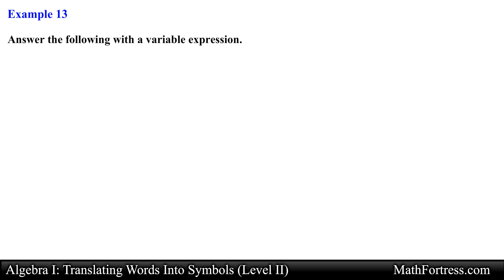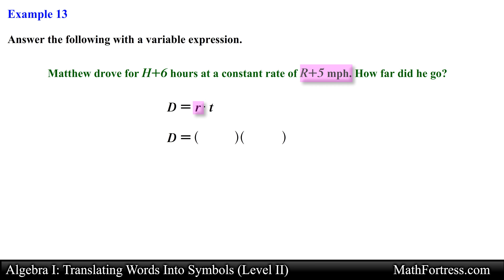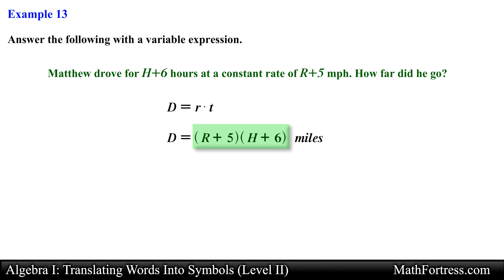Let's work on questions that require the use of formulas. 'Matthew drove for (h + 6) hours at a constant rate of (r + 5) miles per hour. How far did he go?' This is a distance equals rate times time problem, using the formula d = rt. The rate is (r + 5) and the time is (h + 6), so substituting with grouping symbols, the final variable expression for distance is (r + 5)(h + 6) miles.